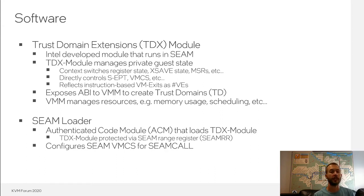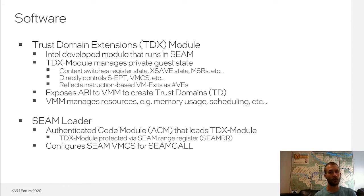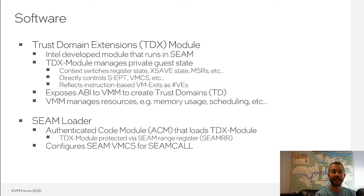Another notable software component in TDX is the SEAM loader, an authenticated code module responsible for verifying and loading the TDX module. Once loaded, the TDX module is protected via a new set of range registers called the SEAM RR, which prevents code from outside the SEAM module from reading or writing its code and data. The SEAM loader also configures the SEAM VMCS for SEAM call — underneath the hood, SEAM call is a fancy variant of VM exit, where SEAM call executed in VMX root effectively causes a VM exit from VMX root into SEAM root, with SEAM root as the host and VMX root as the guest state. When the SEAM loader loads the TDX module, it programs the entry point of the TDX module into the host RIP field of the SEAM VMCS.